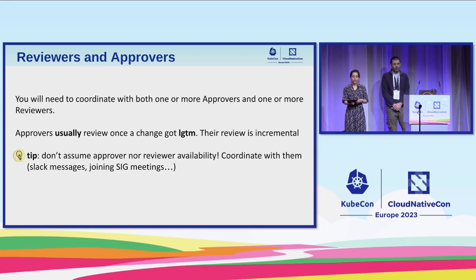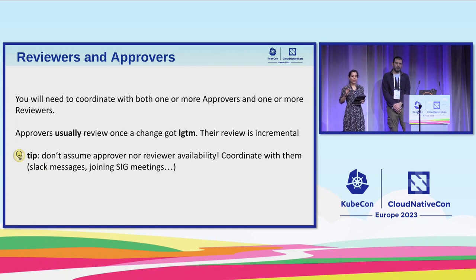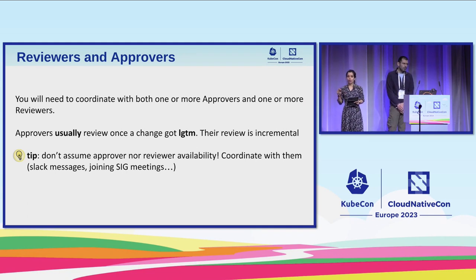The PRs must be reviewed by at least one member of the community to ensure that the code is well-written and meets the project's guidelines and standards. Once a reviewer has indicated that the PR looks good to them, the PR must be approved by at least one Kubernetes approver. This approver has the authority to approve the code changes, and you have to convince them and make sure that the code changes align with the project's overall direction as well as the SIG's overall direction.